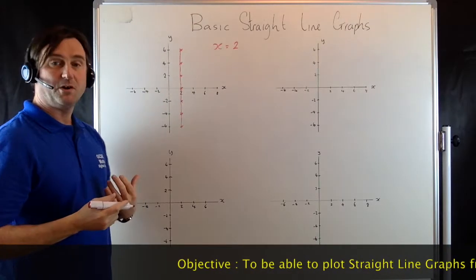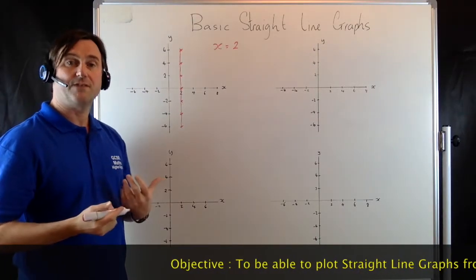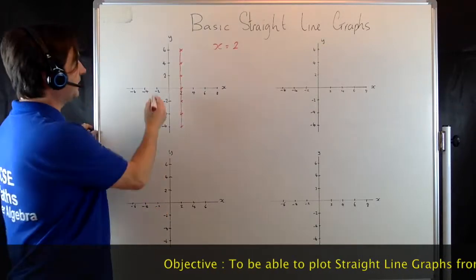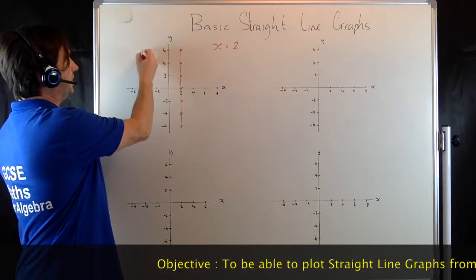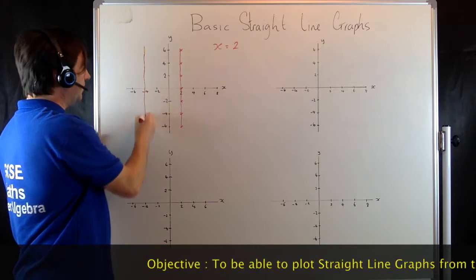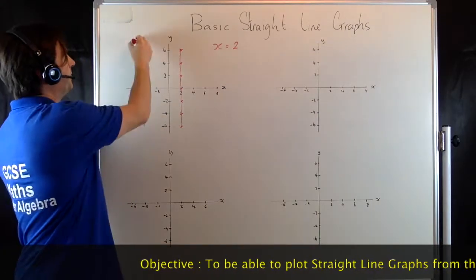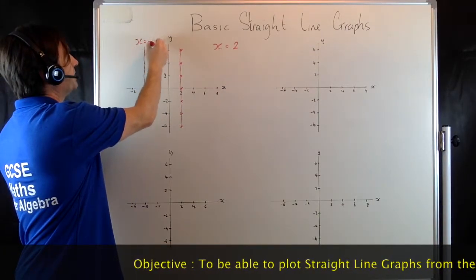So any other graph we could plot on here, as long as you know the x value. Obviously the graph of x equals minus 4, for example, would go through minus 4, there. It would be x equals minus 4.